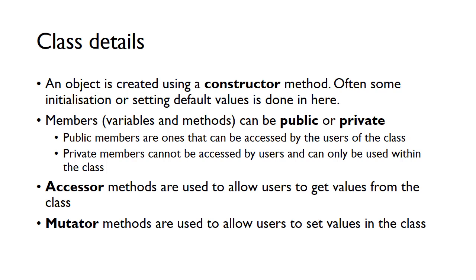You tend to make things private when you don't want people to mess around with them. For example, if you've got an important variable inside your class, you don't want users to be able to modify it directly because giving it an incorrect value might stop it working. You can make that variable private so users of the class can't affect it directly. Accessor methods allow users to get values from the class — you access a value through an accessor method. A mutator method is the opposite: it allows users to set values in the class by calling the mutator method rather than modifying variables directly.